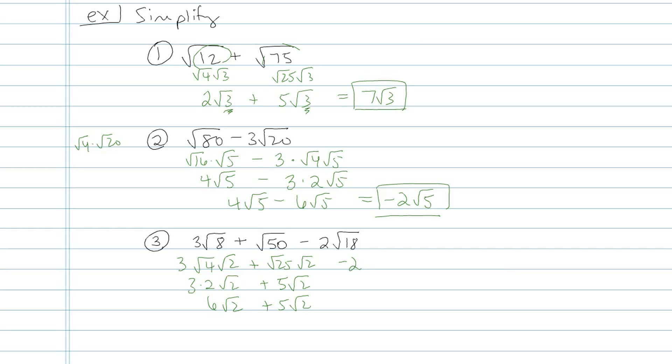My third term, I have to deal with square root of 18, so I'm going to make that square root of 9 times square root of 2, because square root of 9 is 3. So my last term outside my square root is negative 2 times 3, which is negative 6, and then root 2.